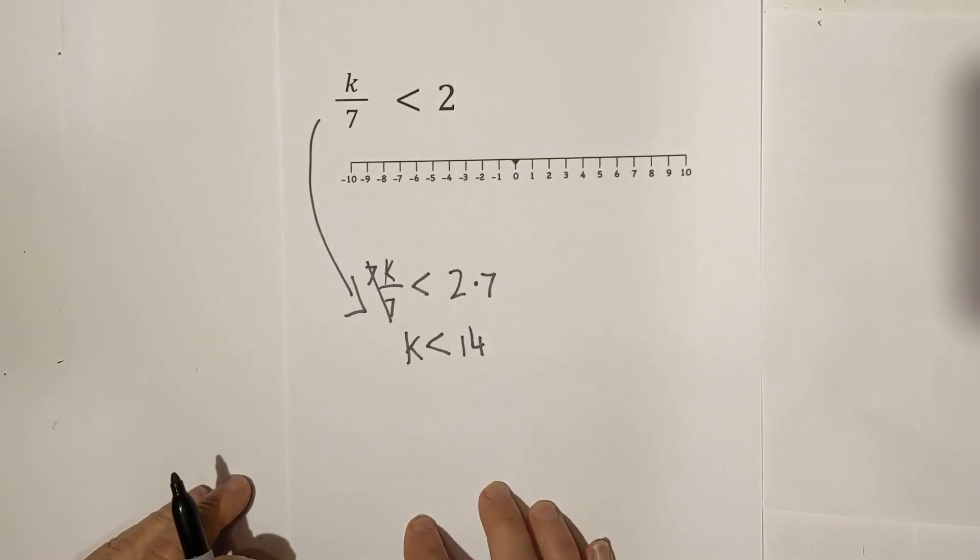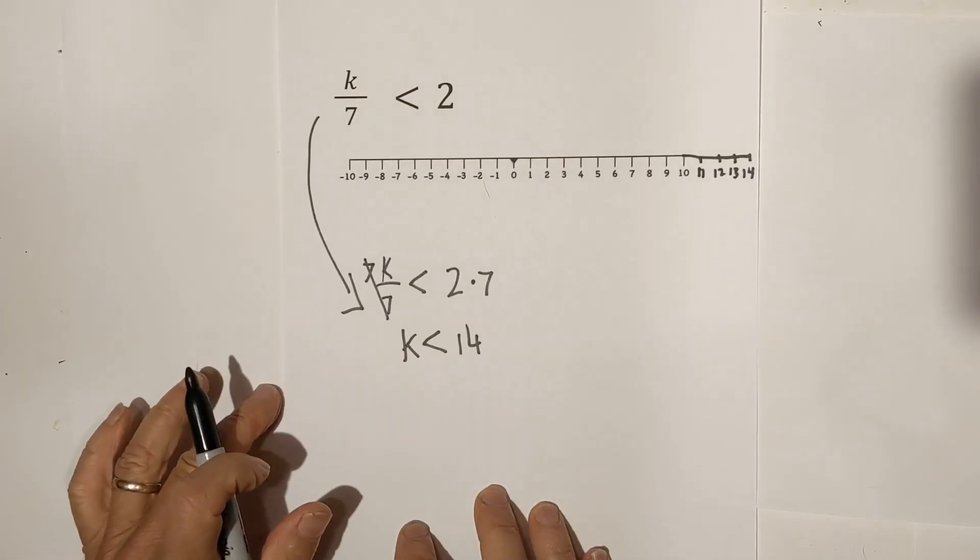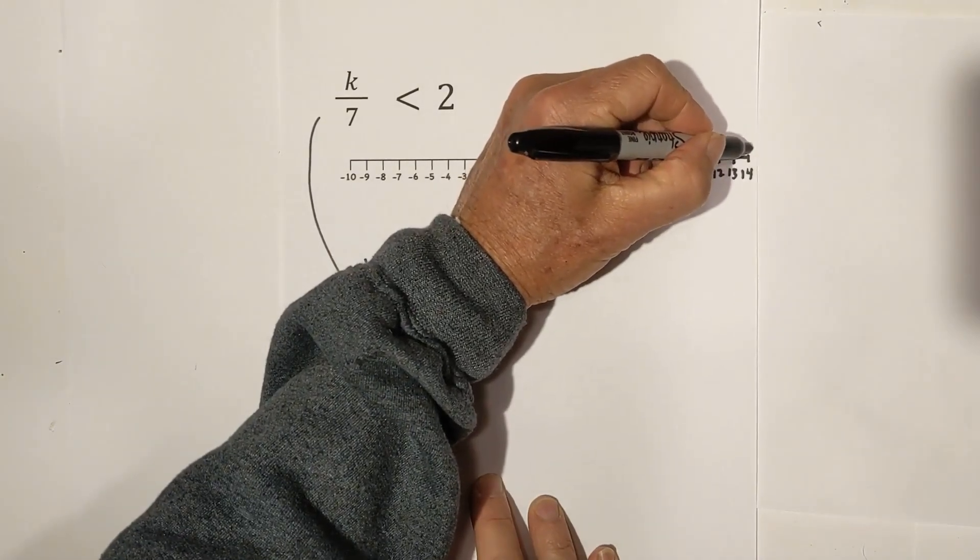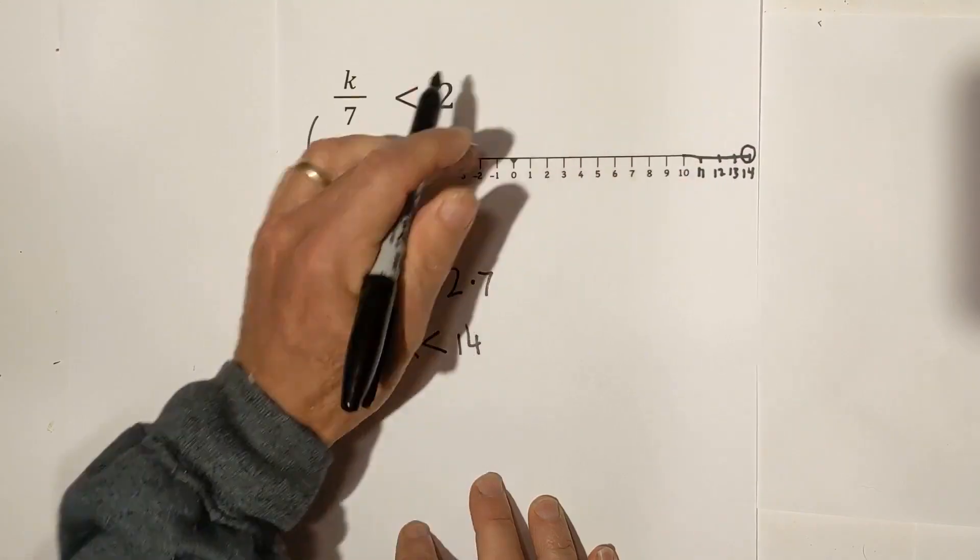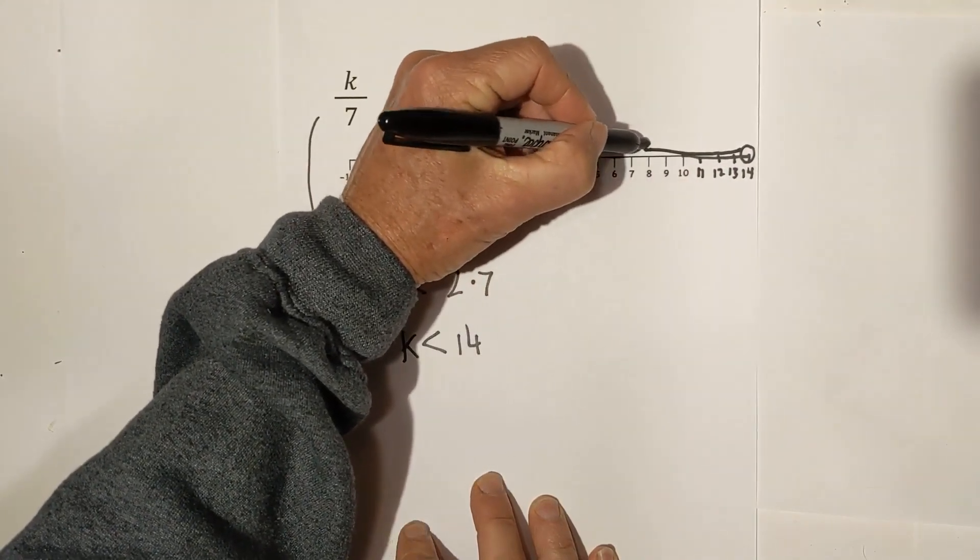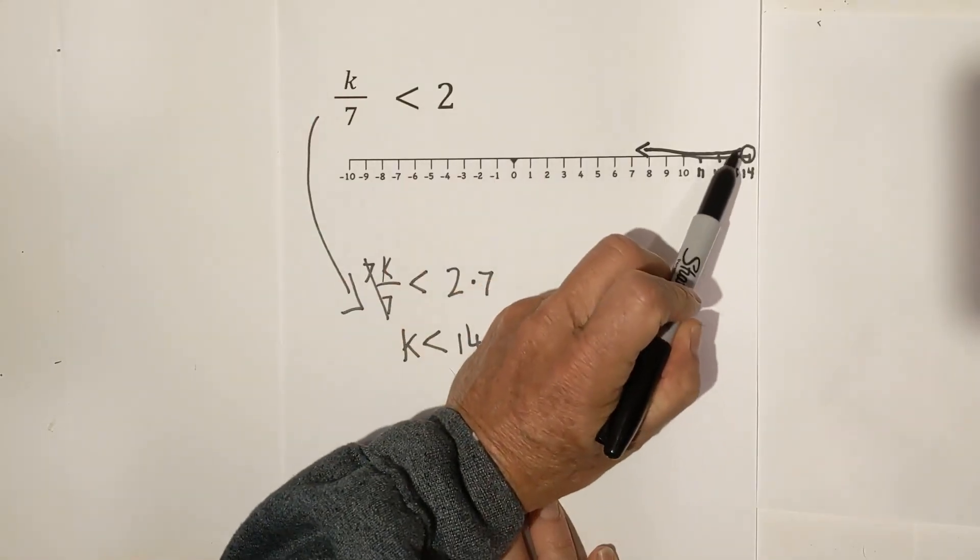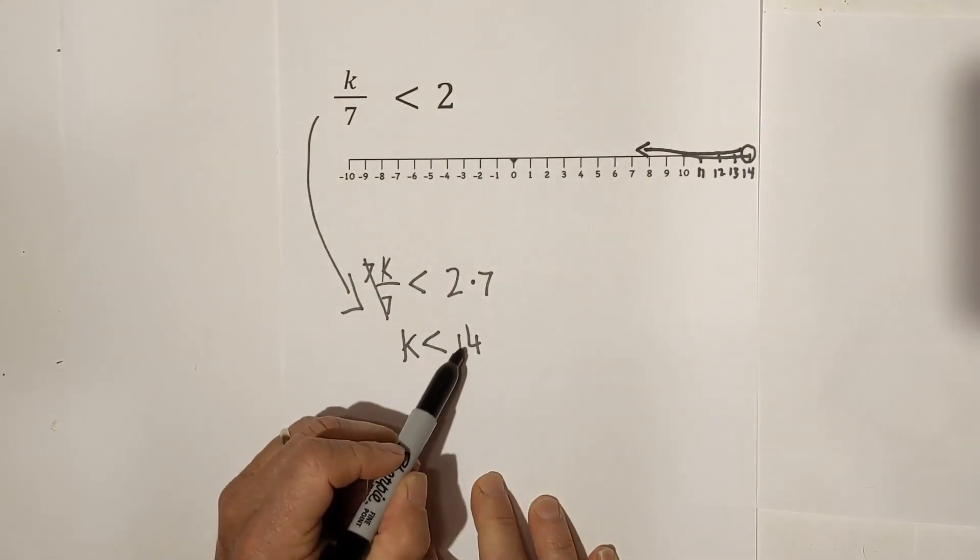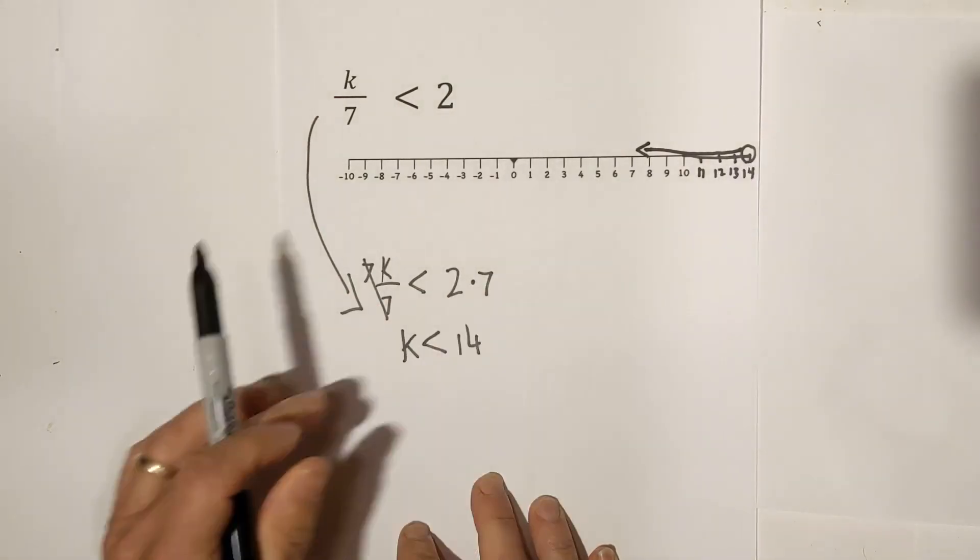And let's go to the number line. So K is less than 14. Since it's less than 14, we're going to go to 14, and we're going to keep it open, and draw an arrow in this direction. And the open tells you that the 14 is not included. So it's going to be less than 14, the open arrow.